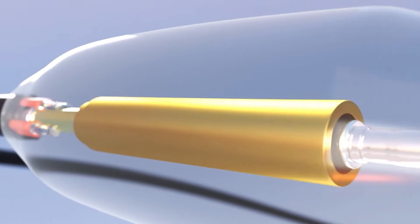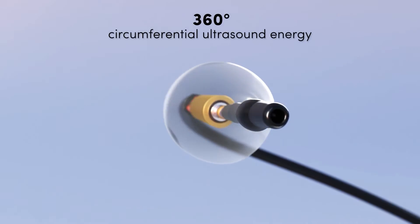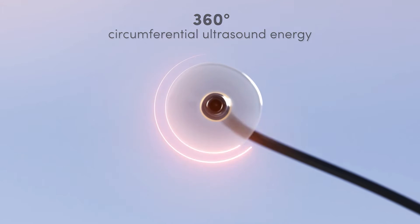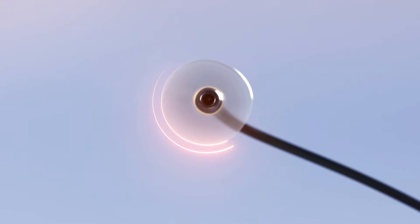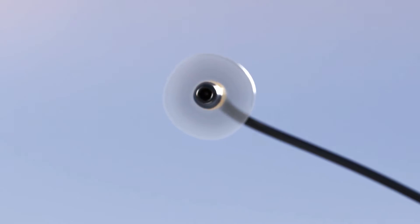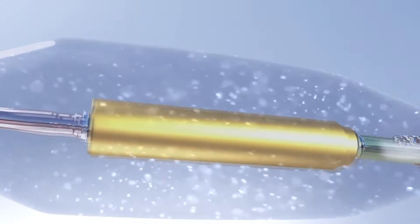The Paradise Ultrasound RDN system delivers 360 degrees of circumferential ultrasound energy through a balloon catheter to interrupt overactivity of the nerves surrounding the renal arteries and reduce blood pressure.